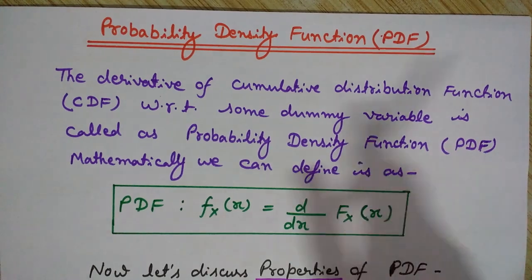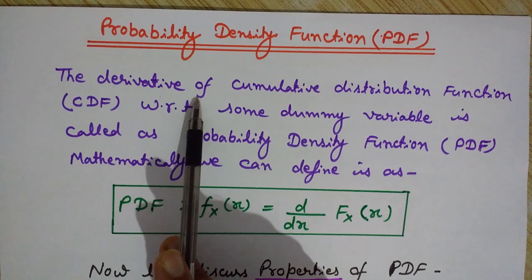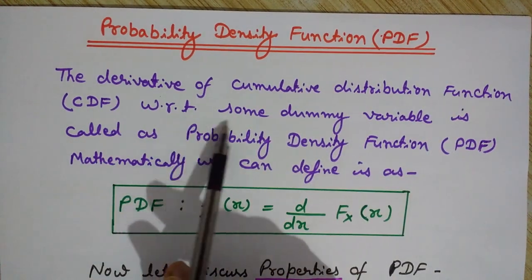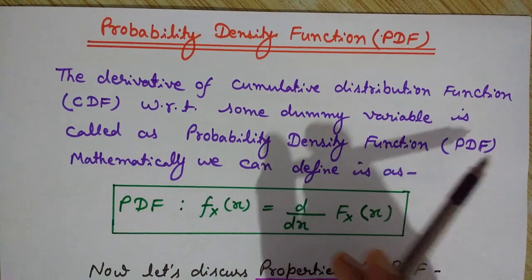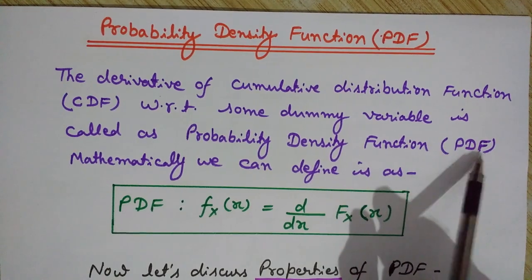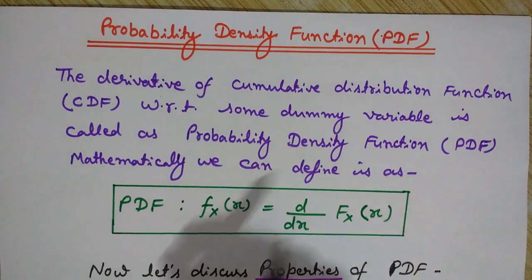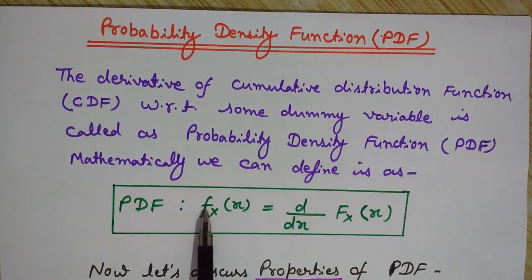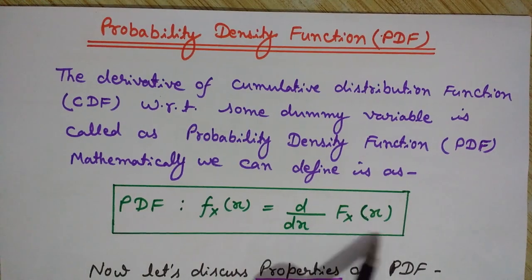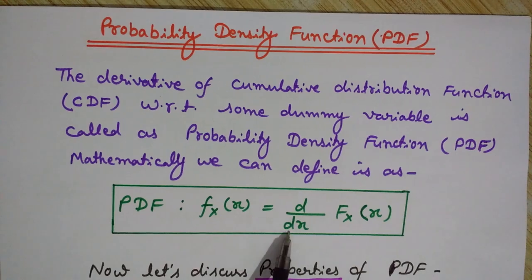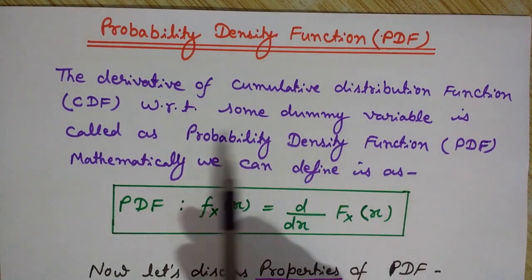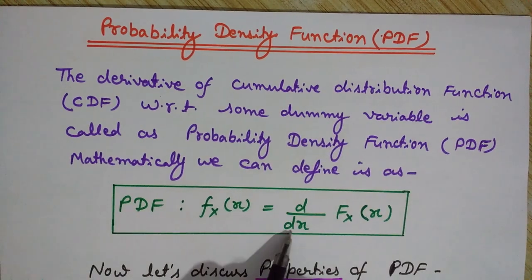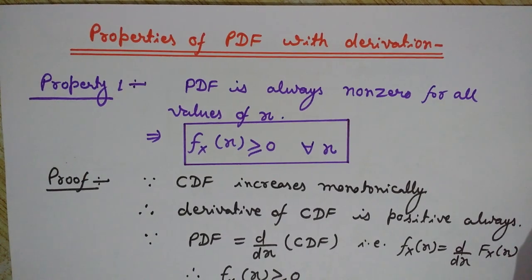The probability density function is simply the derivative of the cumulative distribution function with respect to some dummy variable. We call it in short as PDF, denoted by small f. The notation is f_X(x), where capital X denotes the random variable. For CDF we use capital F, while for PDF we use small f. PDF is defined as the differentiation of the CDF with respect to x: f_X(x) = d/dx [F_X(x)].